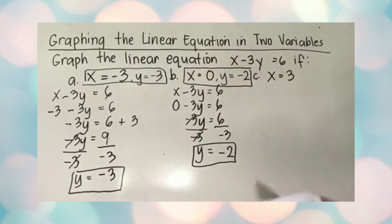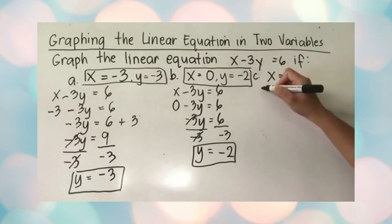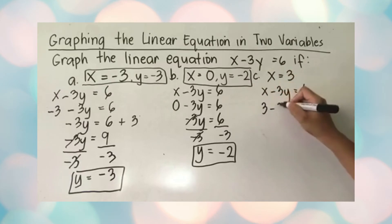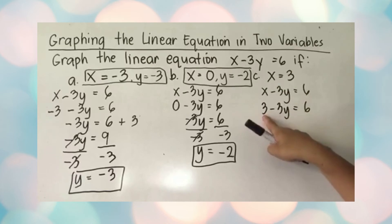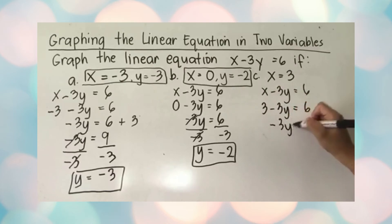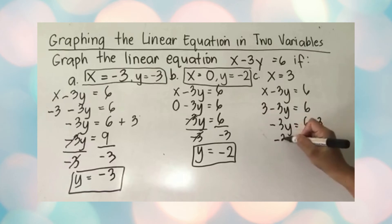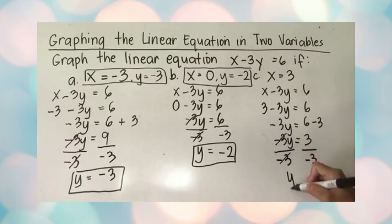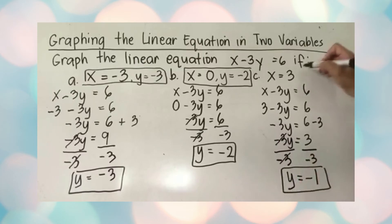For the last one, x is equal to three: substitute into x minus 3y equals 6, giving 3 minus 3y equals 6. Move three to the other side — it becomes negative — so negative 3y equals 6 minus 3, which is 3. Divide both sides by negative three: y equals 3 divided by negative three, which is negative one. So if x equals three, y equals negative one.